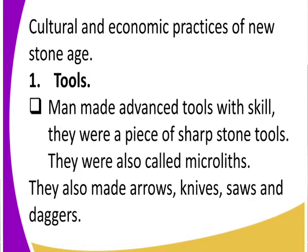Man made advanced tools with skill during this stage. He had greater mental capacity compared to earlier evolutionary stages. They made sharp tools called microliths — these were made into arrows, knives, saws, and daggers.